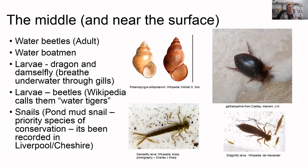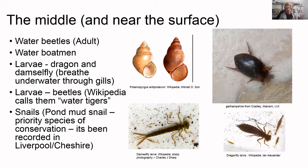Water boatmen - Corixidae - unlike backswimmers that mainly stick to the surface, water boatmen go up and down and all around near the surface. They feed on slightly different things: plants, algae, diatoms, protozoa, and small insects. Thinking about competition and evolution, backswimmers dominate the surface and water boatmen have effectively decided to go a little bit below rather than compete, though they do come to the surface too.